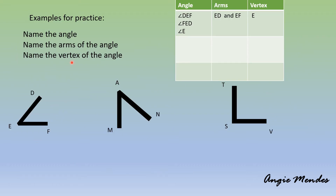Here are some examples for practice. You have to name the angle, name the arms of the angle, and name the vertex of the angle. Let's look at the first one. To name the angle we can name it DEF — we put the angle symbol before the name. So we have named this angle DEF. This angle can also be named as FED, and it can also be named as angle E. Remember we always write E in the center when naming with three letters: DEF or FED, keeping E in the center, or we can simply say this is angle E.